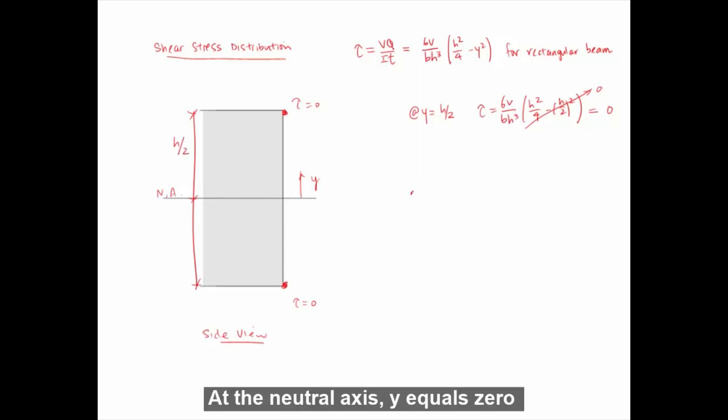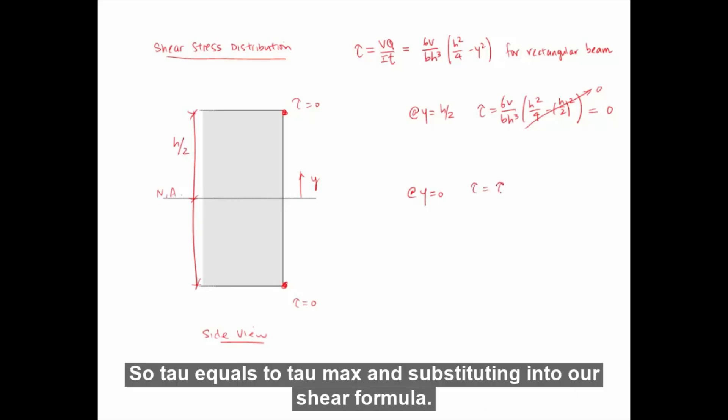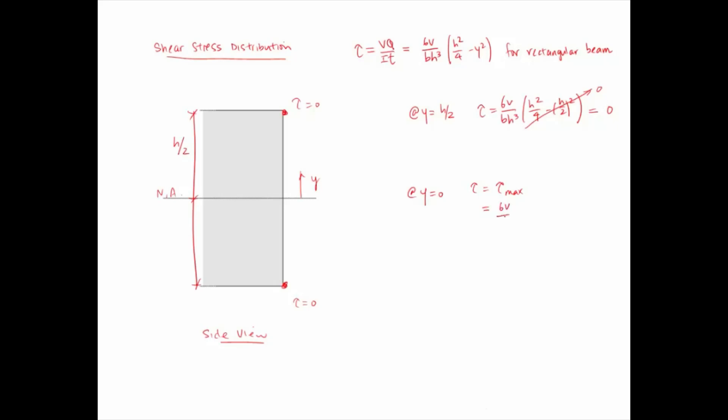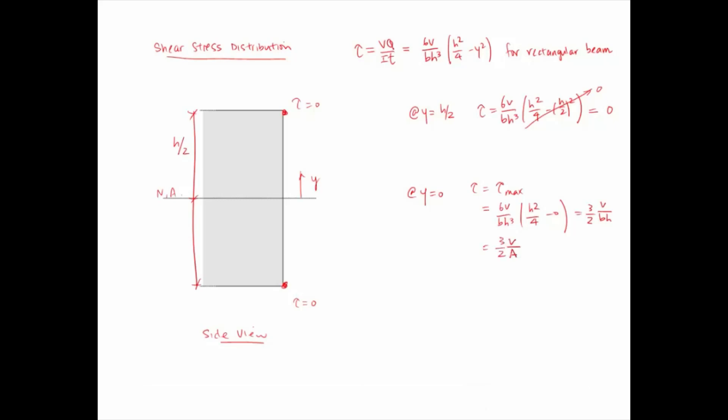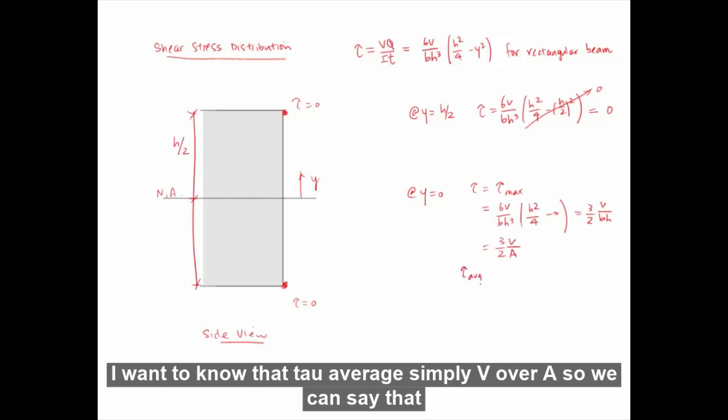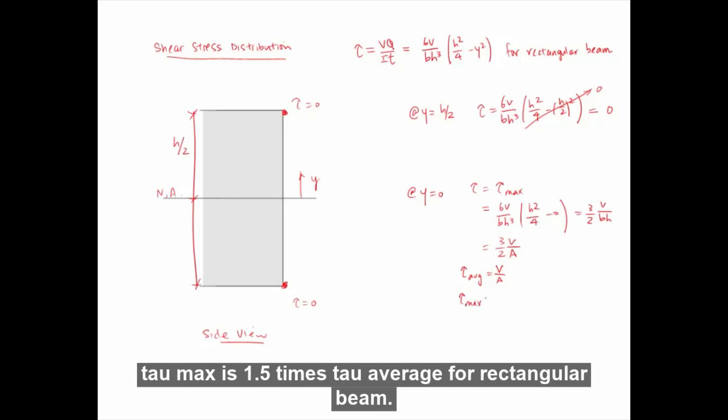At the neutral axis, Y equals 0. This should be our maximum shear stress, so τ equals τ max. Again, substituting into our shear formula, Y is 0, and we can simplify this to 3 over 2 V over BH. B times H is A, so we can further simplify this to 3 over 2 V over A. We want to note that τ average is simply V over A, so we can say that τ max is 1.5 times τ average for rectangular beam.